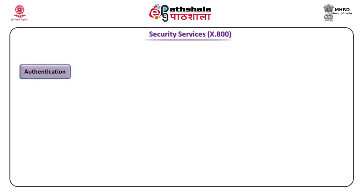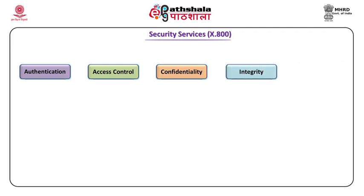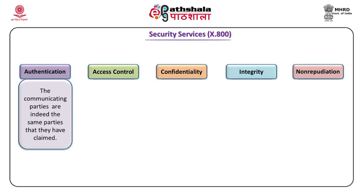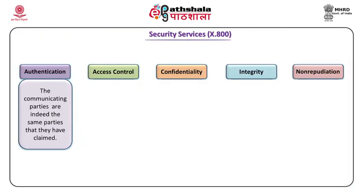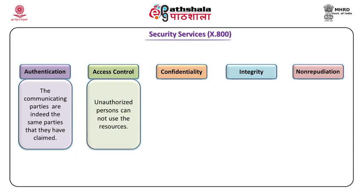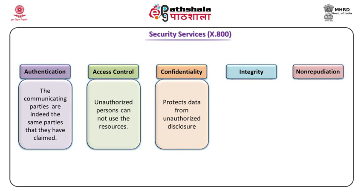There are five types of security services: authentication, access control, confidentiality, integrity, and non-repudiation. Authentication says the communicating parties are who they claim to be — if I say I am Mr. X and transmitting the message, then I am certainly Mr. X. Access control, the second type, says unauthorized persons cannot use the resources. The third, confidentiality, protects data from unauthorized disclosure — when data is being transmitted and is meant for A and B, nobody else can open the message.